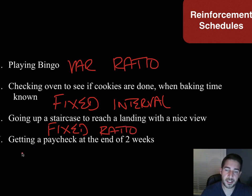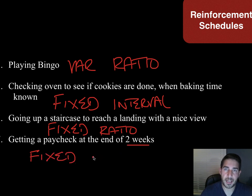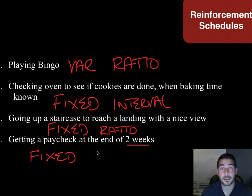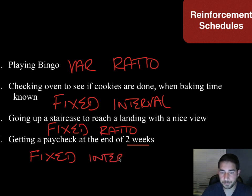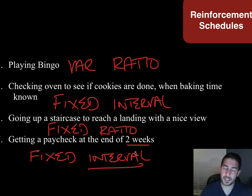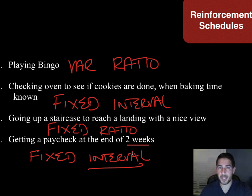Getting a paycheck at the end of two weeks. Do you know when that's going to happen? Yes — at the end of two weeks. So that's fixed. Does your behavior have something to do with it? Actually, no. You're going to get that paycheck at the end of two weeks whether or not you do anything — your boss could fire you, but you're still getting a paycheck at the end of those two weeks. So this one is actually fixed interval. That's tricky because you think you won't get paid if you do nothing, but payday is every two weeks regardless.